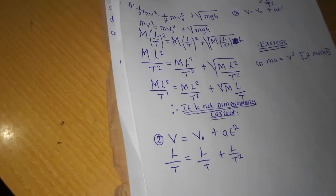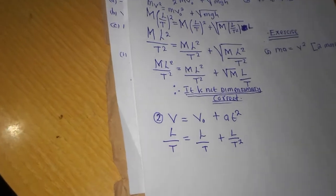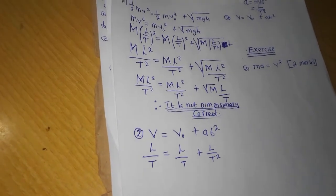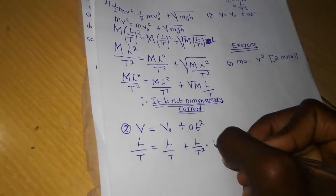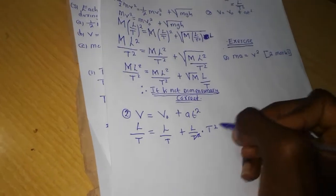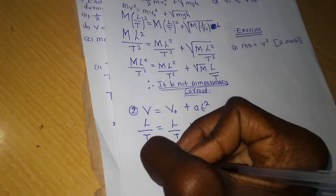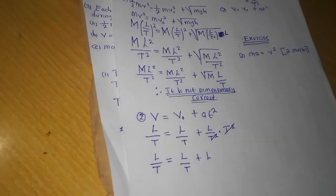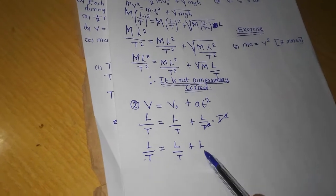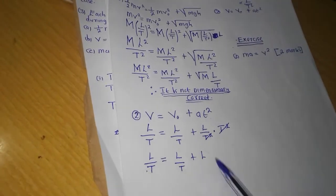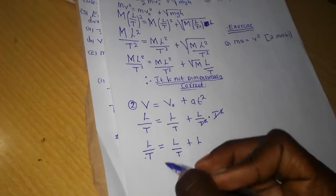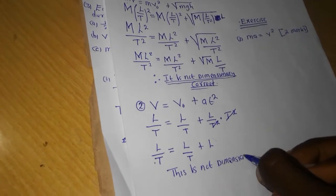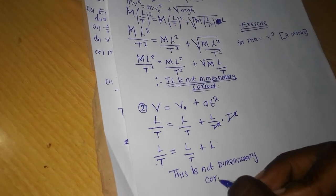The dimensions of acceleration are L over T squared. What are the dimensions of time? Time has the dimensions of just big letter T. So AT² gives us L over T² multiplied by T, which simplifies. We are left with L over T equal to L over T, plus L. Since we have an L on the right with no T below it, the two sides are not equal. Therefore, this is not dimensionally correct.